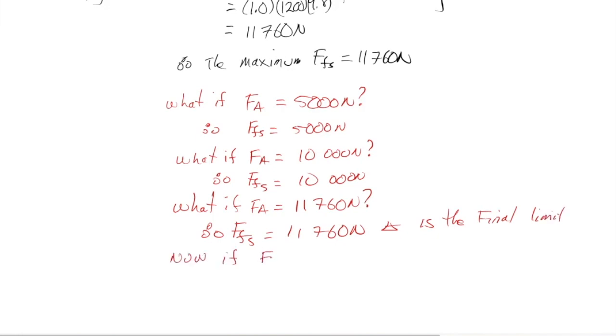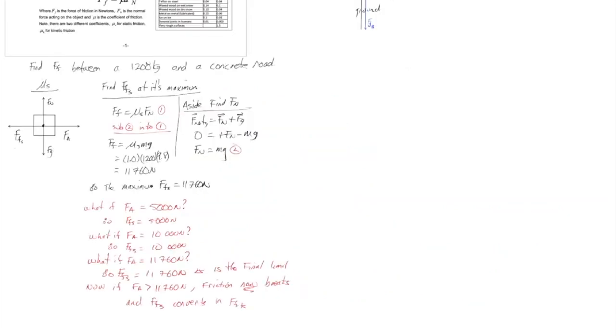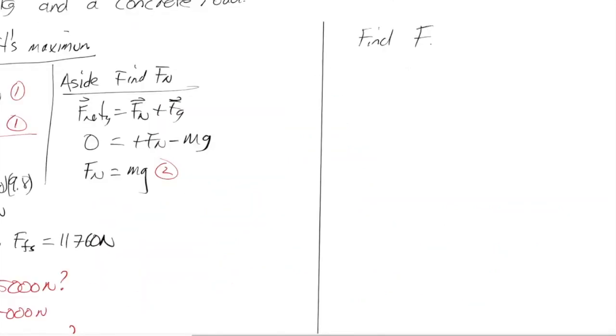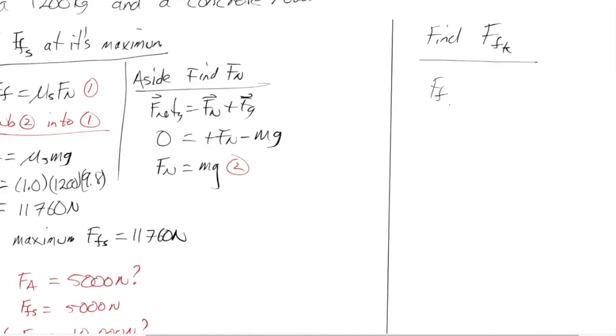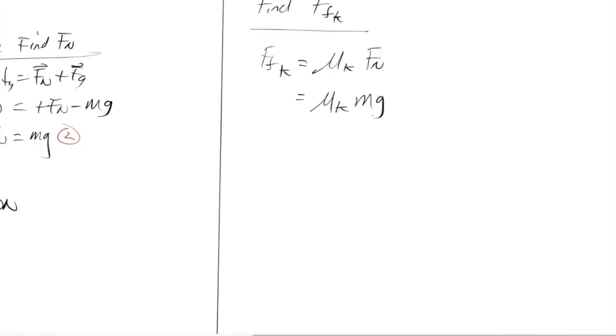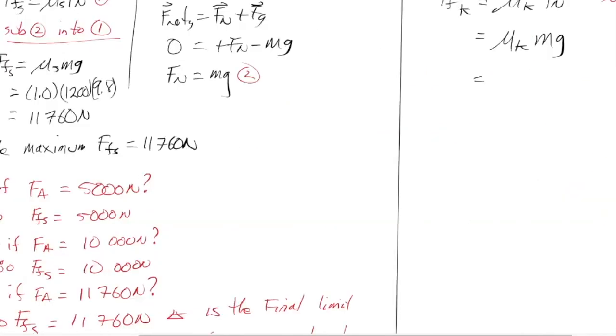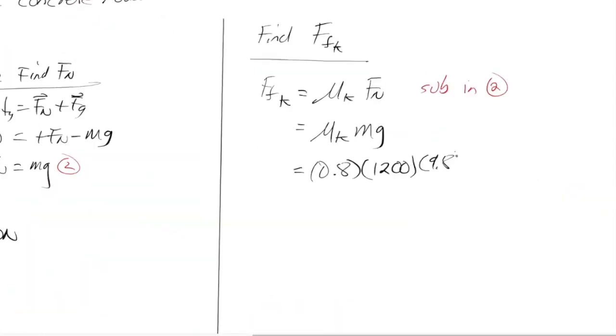Now, if Fa is greater than 11,760 newtons, friction now breaks. Friction now breaks, and force of friction static converts into force of friction kinetic. So now let's explore that. So now let's find the force of friction kinetic. So the force of friction kinetic is equal to mu k times Fn, which is equal to mu k mg after we sub in equation 2. So that value is 0.8. 0.8 times 1,200 times 9.8. The friction would therefore drop immediately to only 9,408 newtons. What would happen to the car?